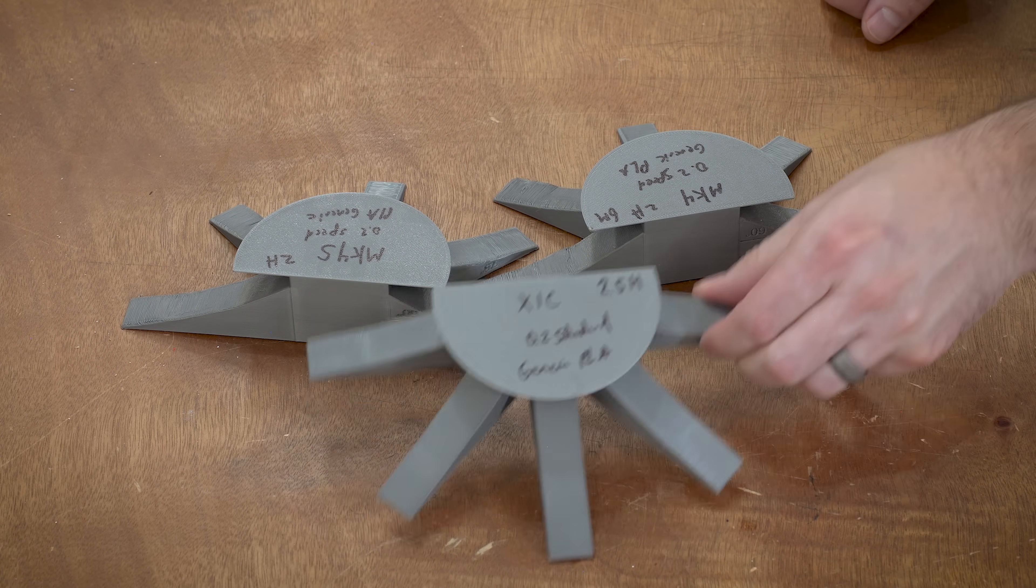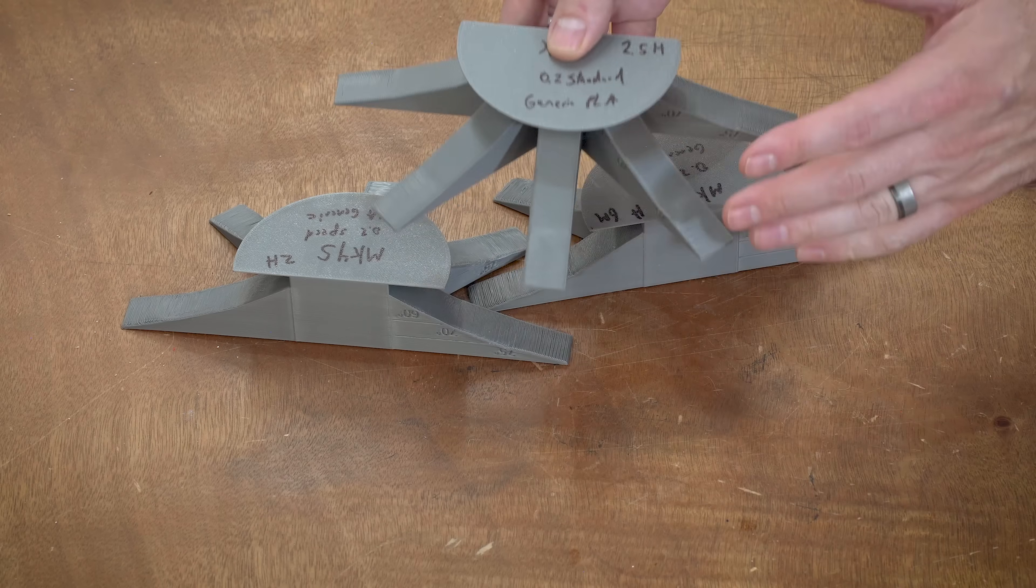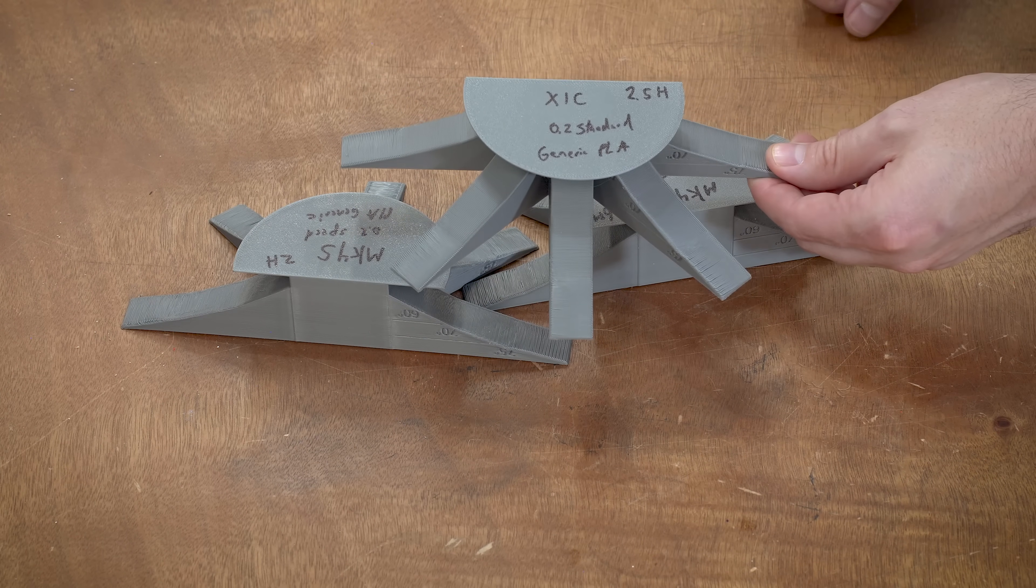So it suffered from the filament choice as well as the poor cooling. So yep, pretty obvious that the Bamboo has the best overhang performance out of these three on this particular test with this filament.